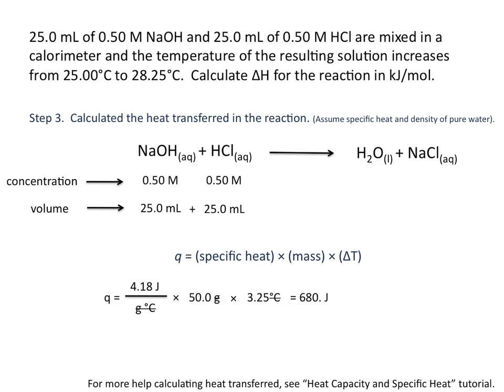But we're looking for delta H in kilojoules per mole. So we need to convert joules to kilojoules. We know that there are 1,000 joules in every 1 kilojoule. This gives us a value of Q, or heat transferred, of 0.680 kilojoules.